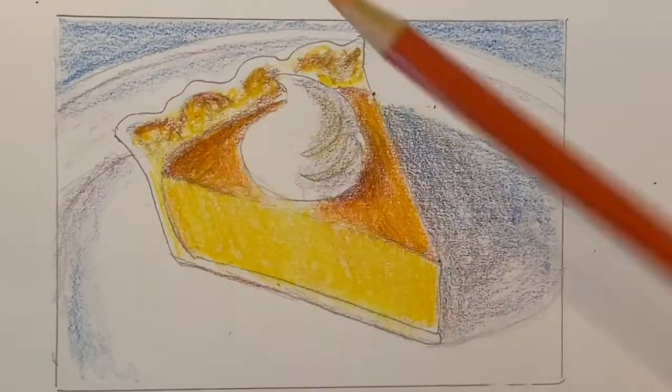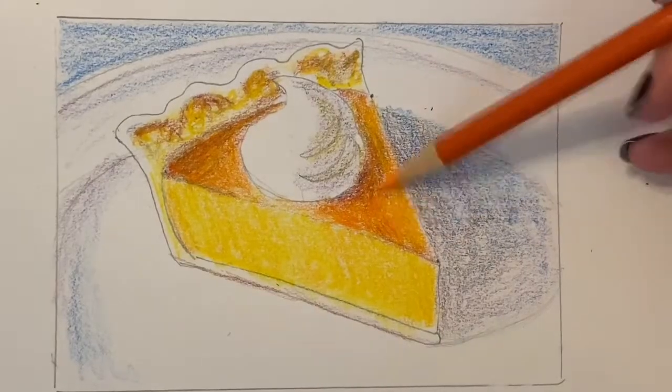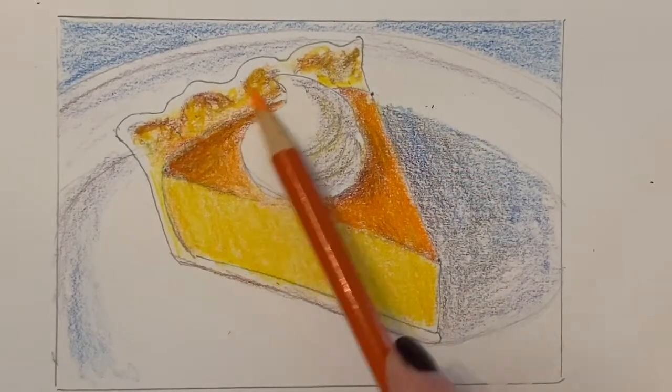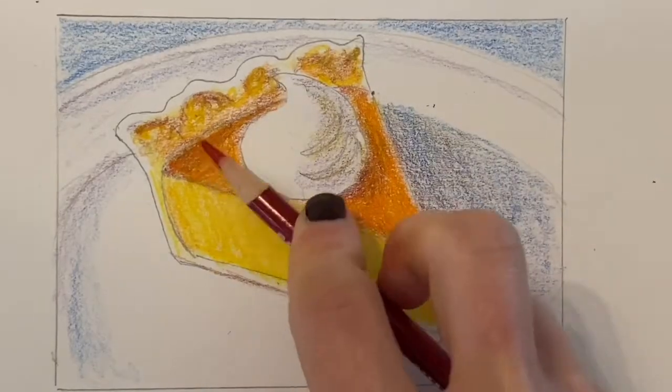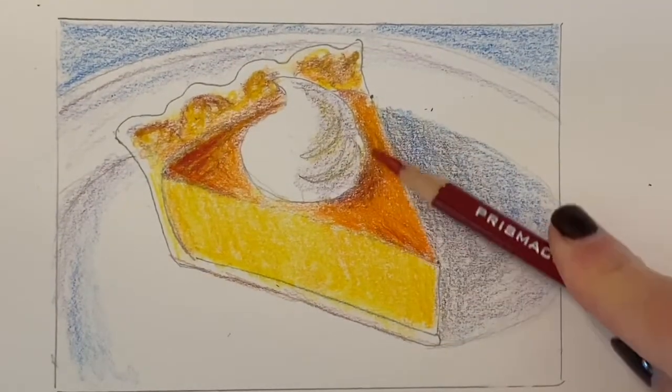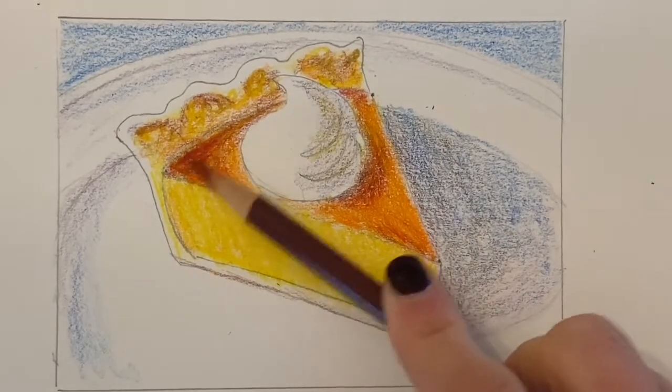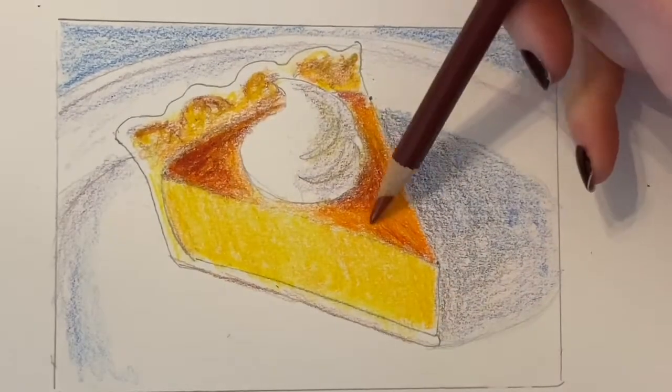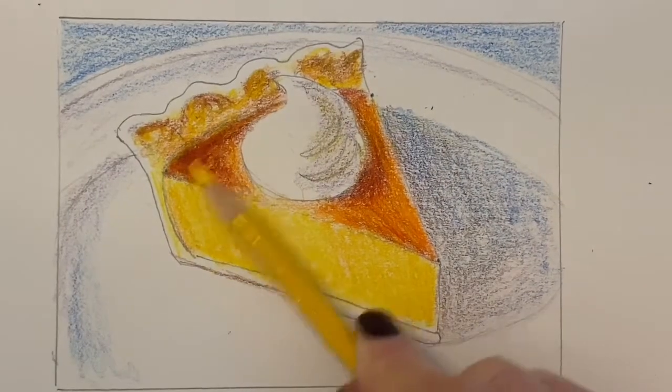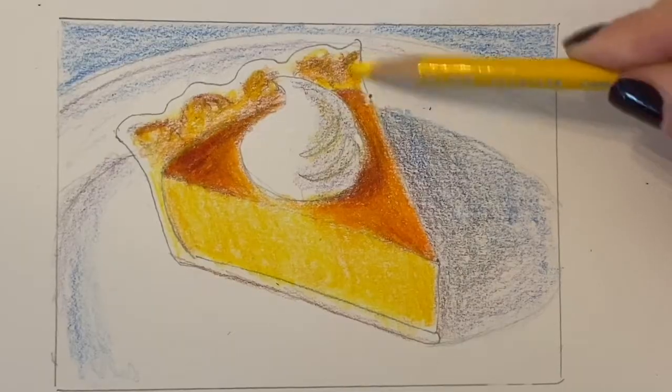Now at this point we have used all of the colors that we're going to be using in this drawing. However, we're not finished yet. We need to keep rotating through these colors again so that we can build up the layers of pencil and really add some vibrancy to the piece. So I'm going through each color again somewhat in the same order and just adding additional layers of them.